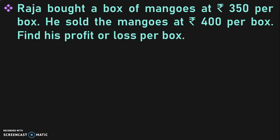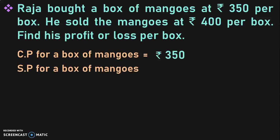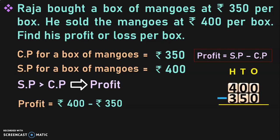Let us do some sums now. Raja bought a box of mangoes at rupees 350 per box. He sold the mangoes at rupees 400 per box. Find his profit or loss per box. Cost price for a box of mangoes is equal to rupees 350. Selling price for a box of mangoes is equal to rupees 400. From this we can see that selling price is greater than the cost price — in such cases, the transaction results in profit. The formula to find out profit is SP minus CP.